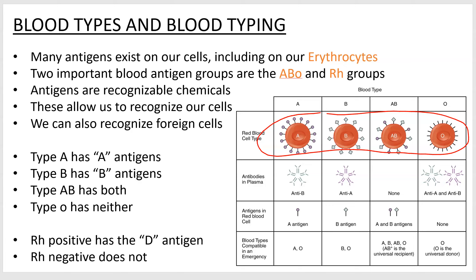The RH groups, not shown here, are either positive — in which case you have the antigen, also called the D antigen — or RH negative, which does not have the antigen. Our immune systems respond to things that are present; they don't respond to blanks. If you show an immune system a clean-looking O negative blood cell, it's not going to be able to respond to it. But if a cell has something you don't have, your immune system can recognize it and go after it.